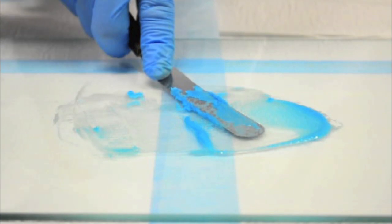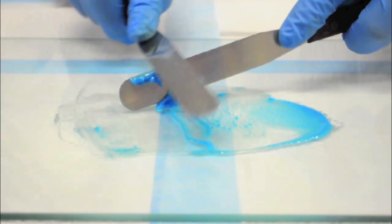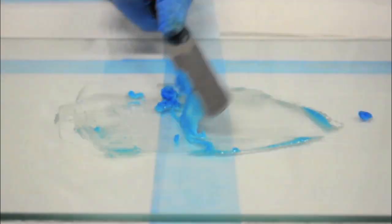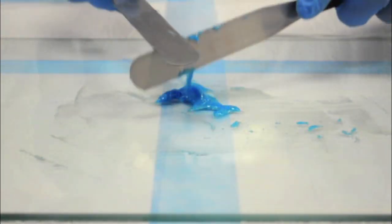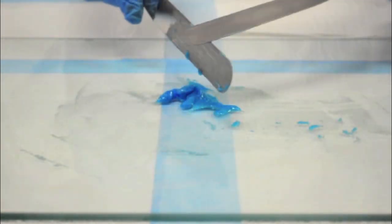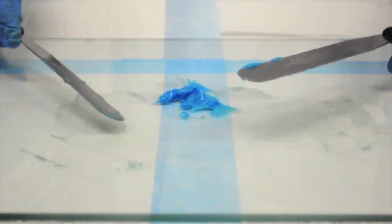If you need to use a second spatula, scrape everything down again. Now, let's put all the ingredients in. Bring all your ingredients into the middle of the glass slab. And if you're happy with what you're getting, no big particles, then you scrape everything and mix it into the beaker of theobroma oil.